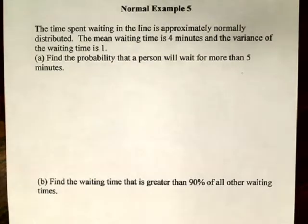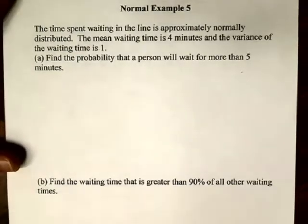So we're going to assume that the waiting time is normally distributed or approximately. And we're going to assume that the mean waiting time is 4 minutes and the variance of the waiting time is 1. That's actually 1 minute squared here.